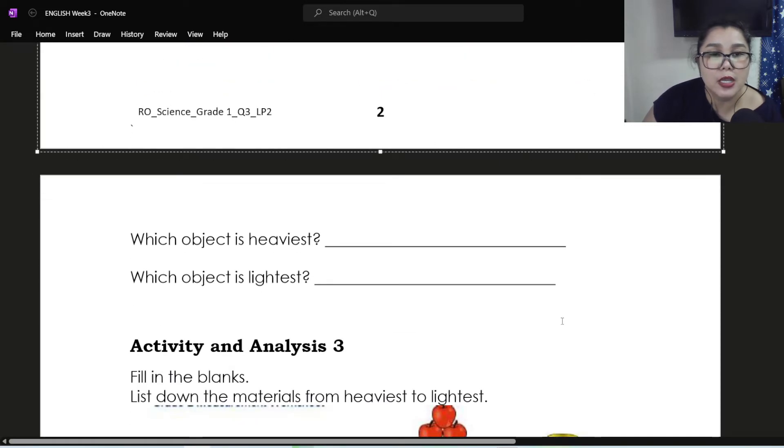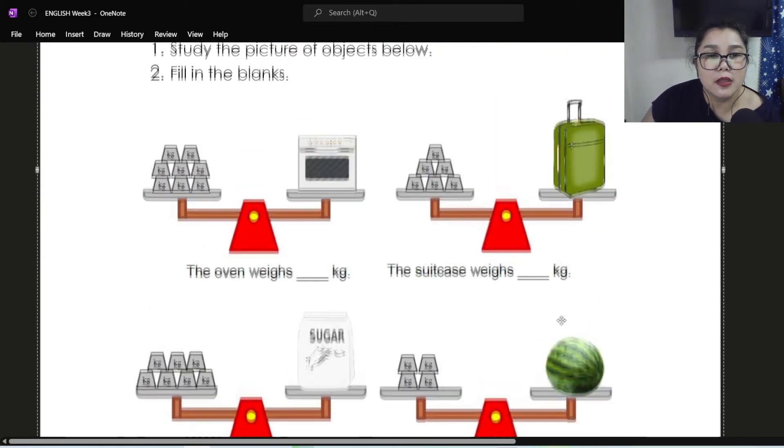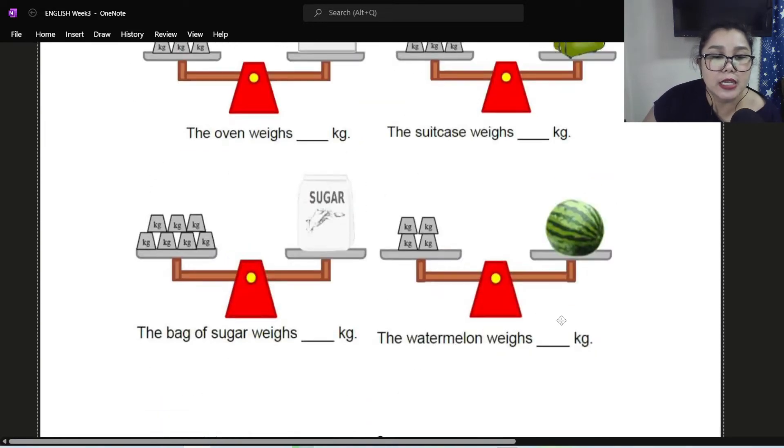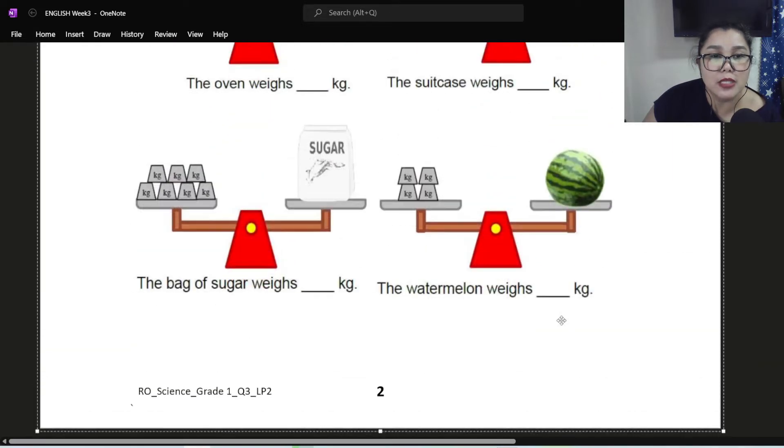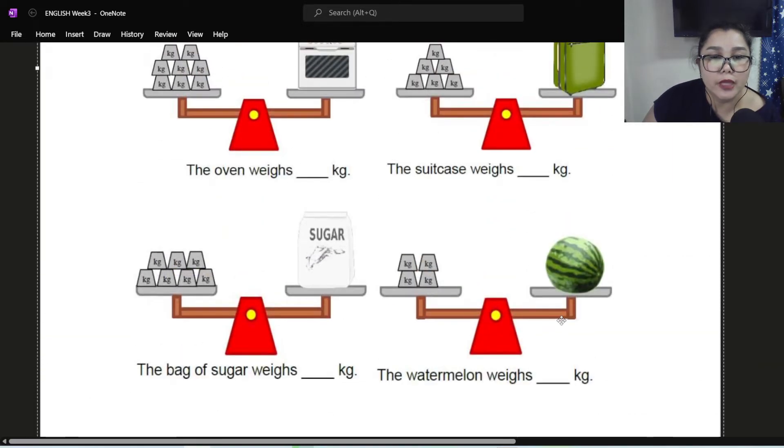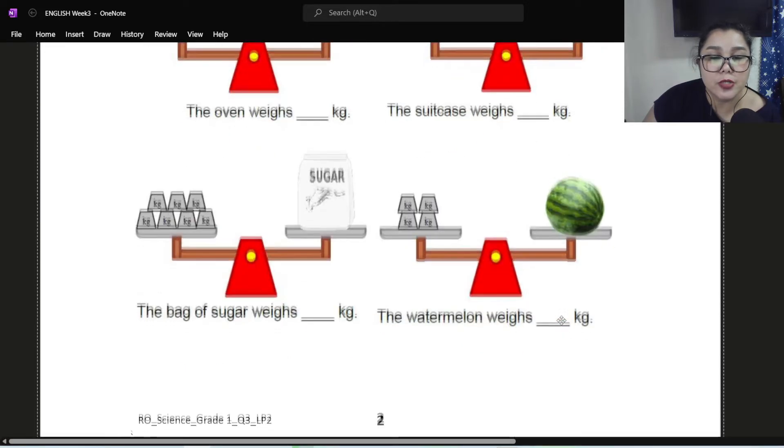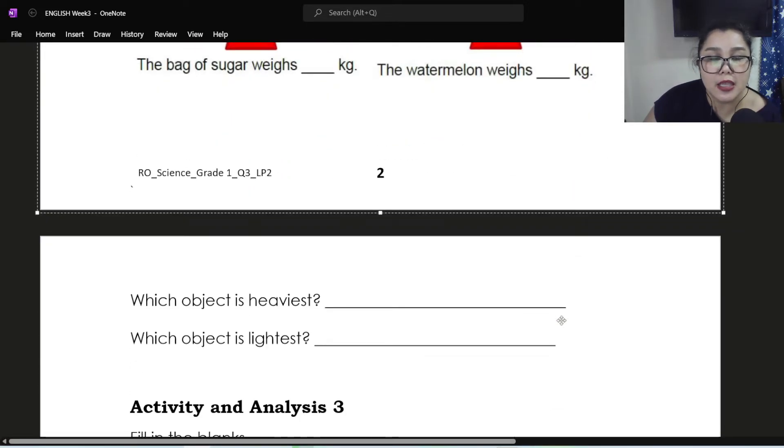Okay. That's it for page two. And then we have two questions based on the activity and analysis two. The questions are, which object is heaviest? So among these four, oven, suitcase, bag of sugar, and watermelon, which object is heaviest? And then the next question, which object is lightest? Among those four.